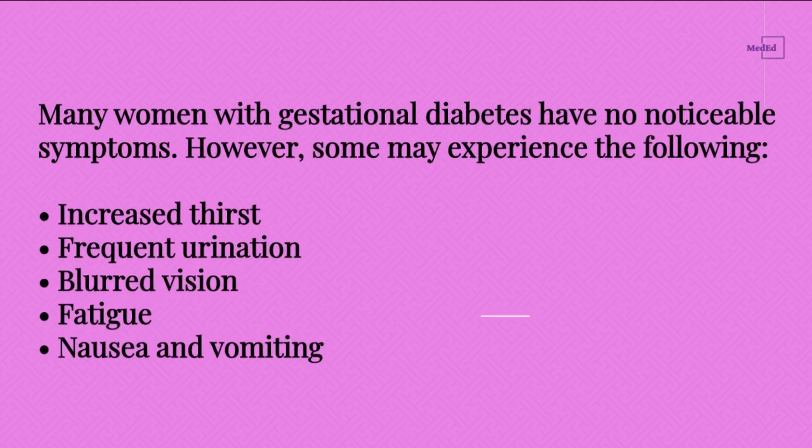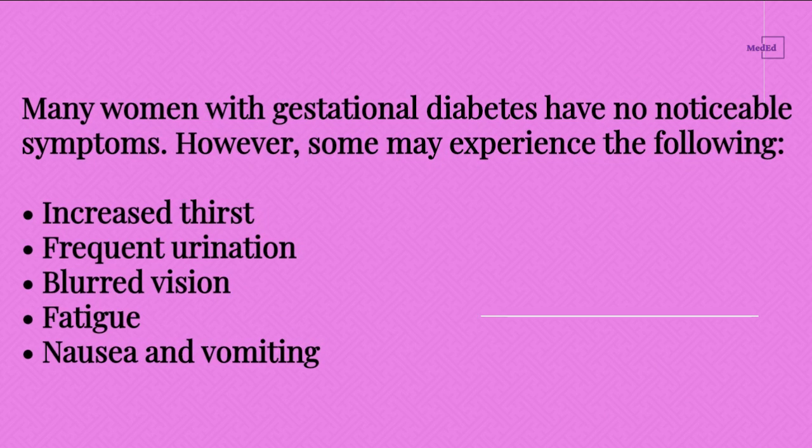Signs and Symptoms of Gestational Diabetes. Many women with gestational diabetes have no noticeable symptoms. However, some may experience the following: increased thirst, frequent urination, blurred vision, fatigue, and nausea and vomiting.